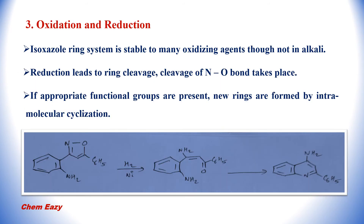Next are the oxidation and reduction reactions. The Isoxazole ring system is stable to many oxidizing agents, though not in alkali. Reduction leads to ring cleavage — specifically, cleavage of the bond between nitrogen and oxygen. If appropriate functional groups are present, new rings are formed by intramolecular cyclization. For example, on reduction of an Isoxazole-containing compound, the N–O bond is cleaved, and due to the presence of an appropriate functional group, the molecule undergoes intramolecular cyclization to give a quinoline ring system.